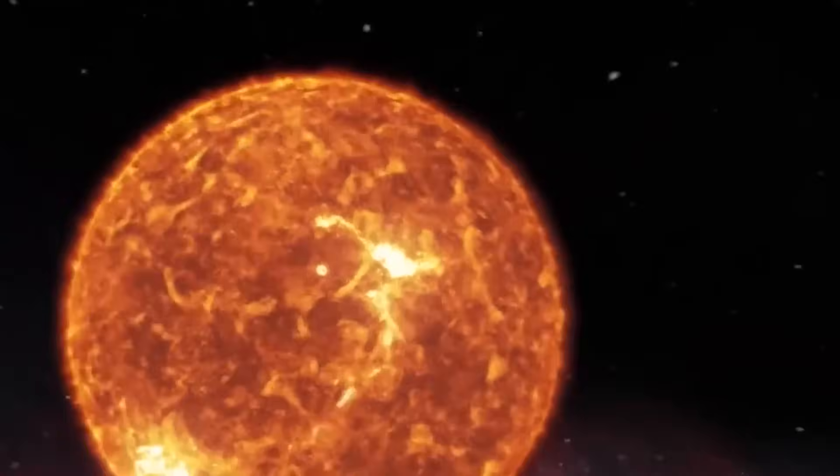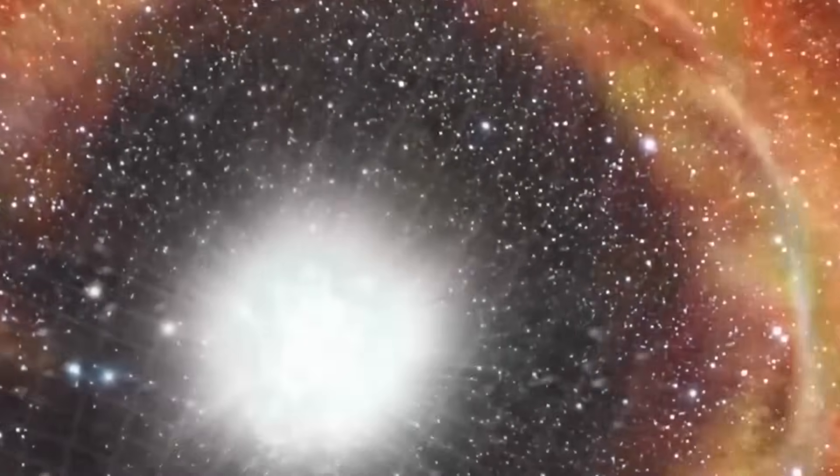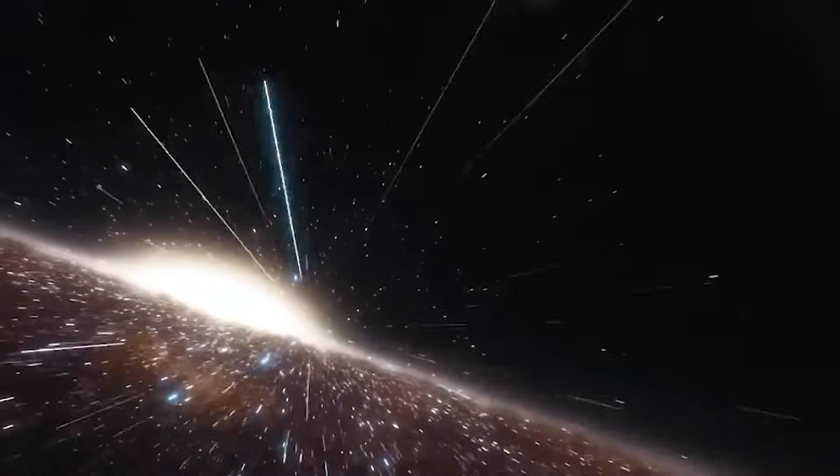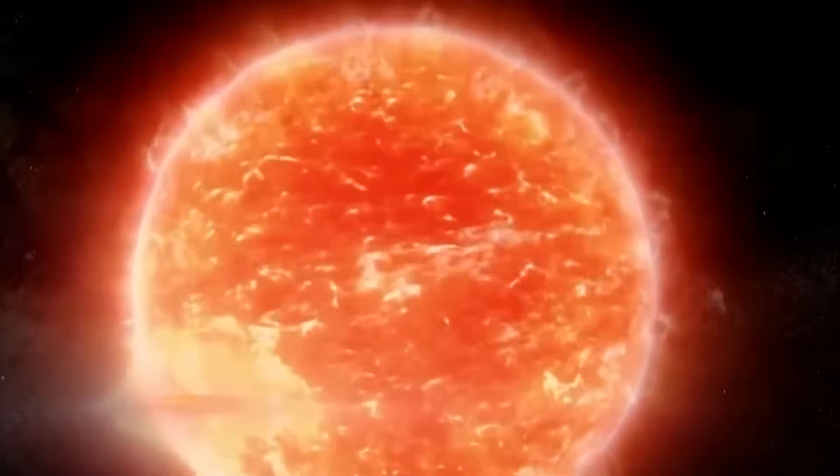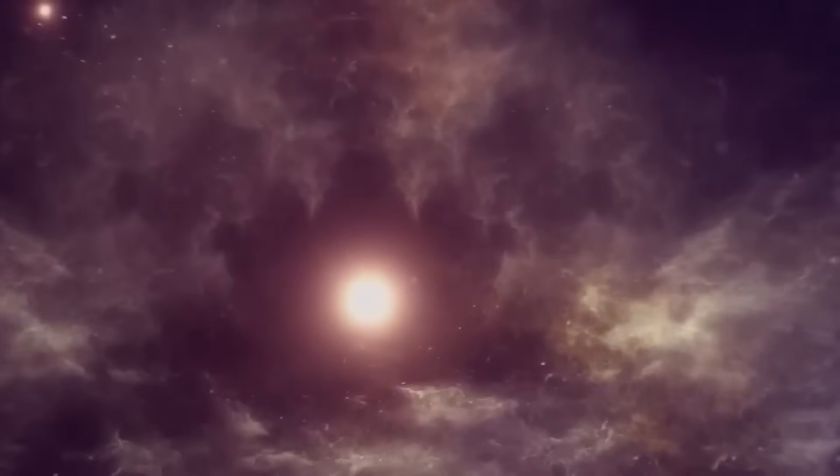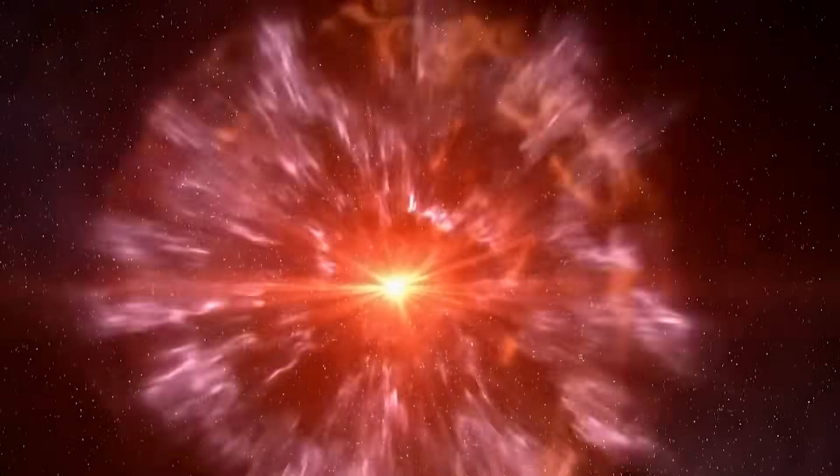This category is reserved for stars exceeding eight solar masses, where the collapse of the core leads to a cataclysmic outburst. The intensity and unique patterns of Betelgeuse's fading brightness might provide new insights into the intricacies of Type 2 supernovae, helping us refine the theoretical models that guide our understanding of stellar life cycles.